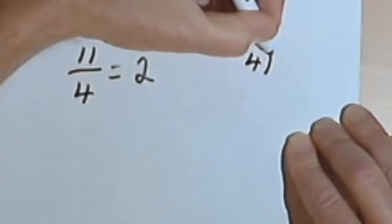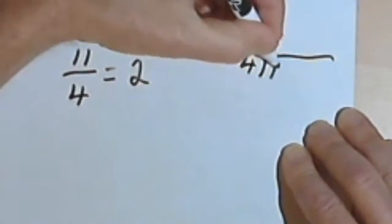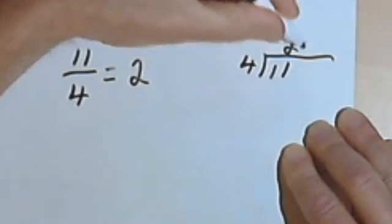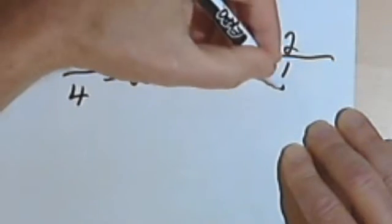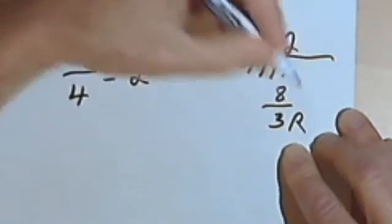4 divided into 11. It goes 2 times. So 2 times 4 is 8. And I have a remainder of 3.